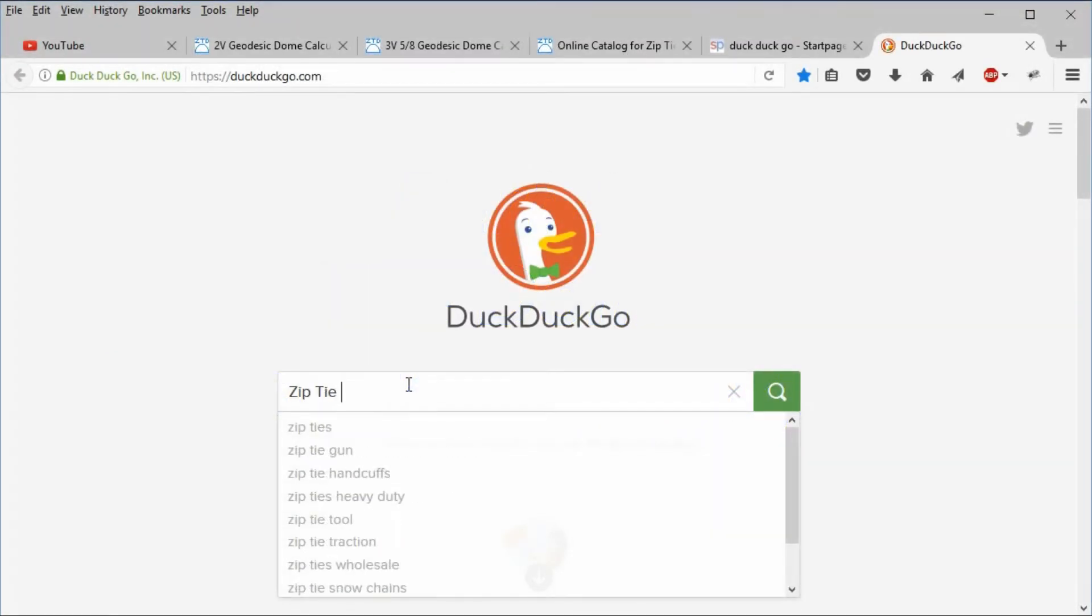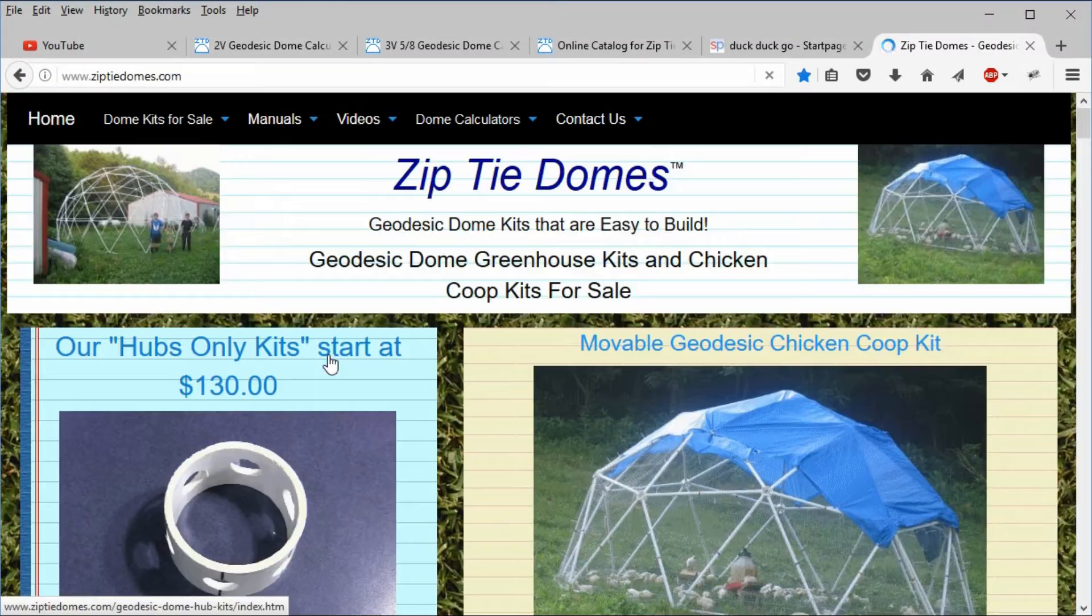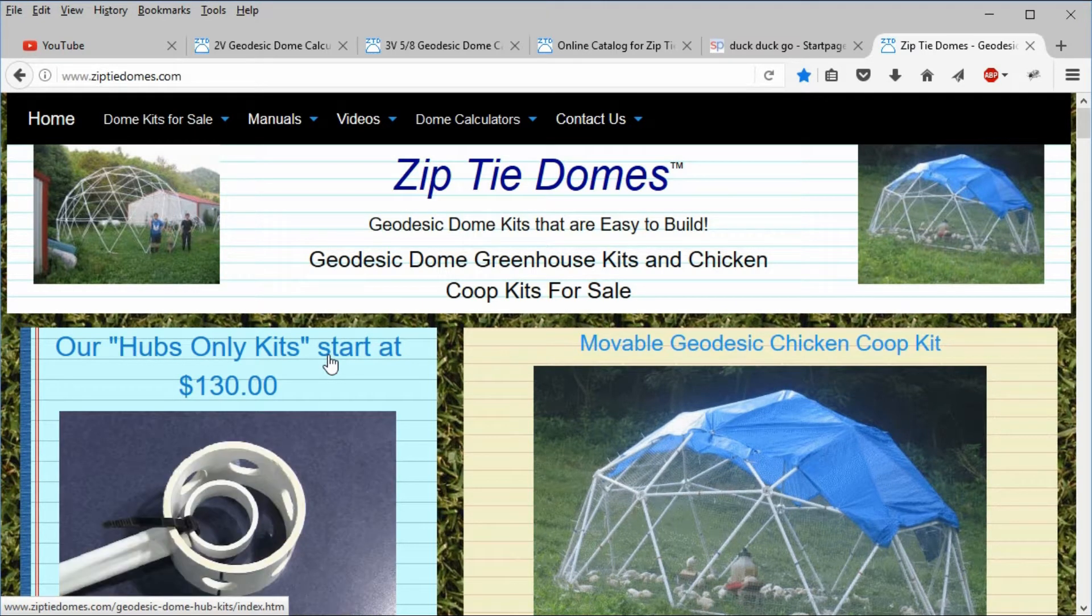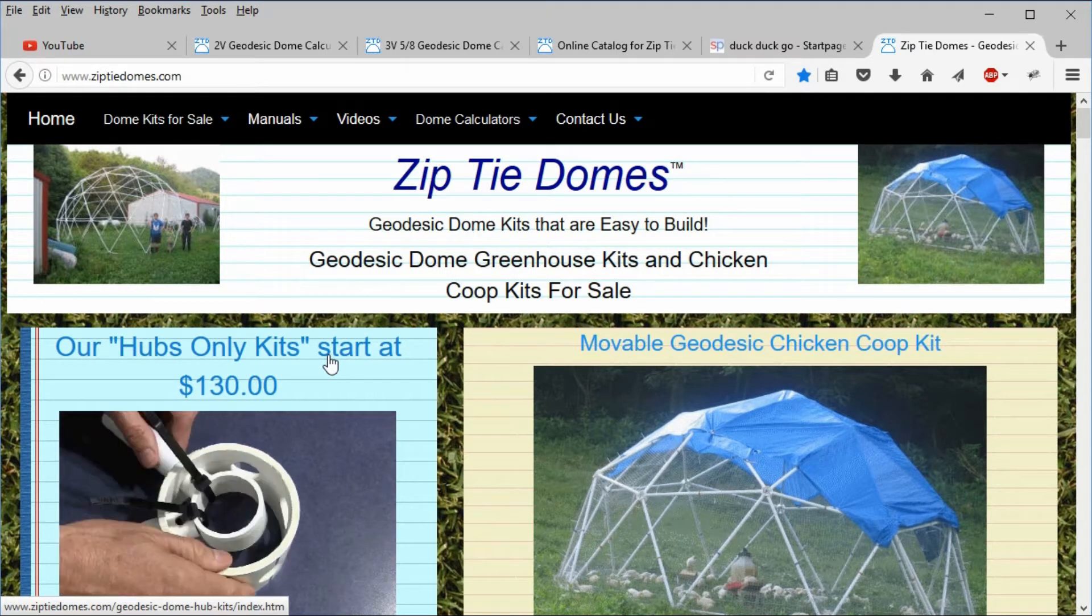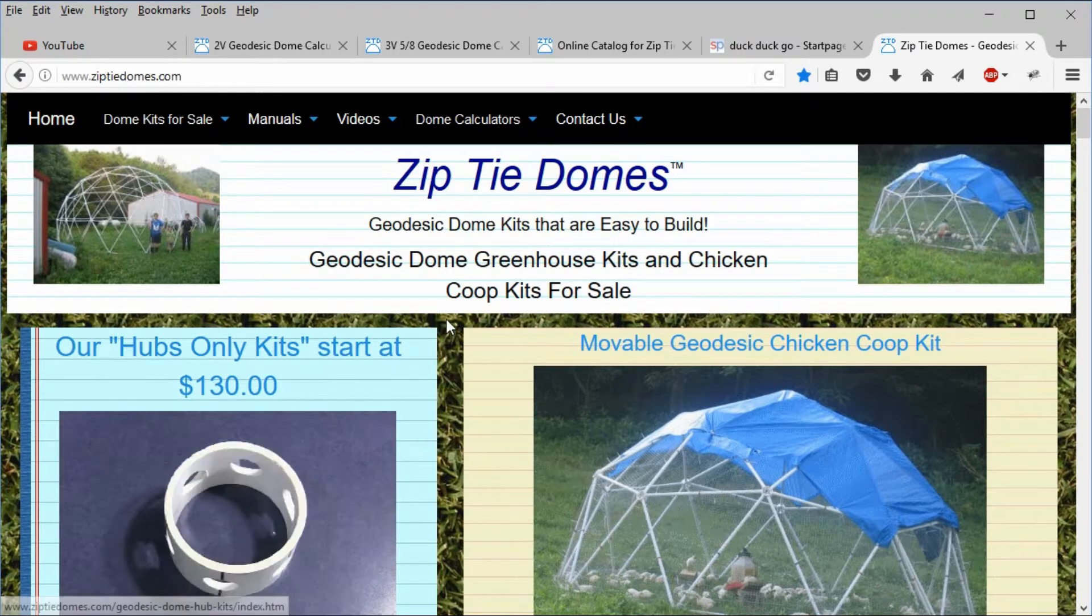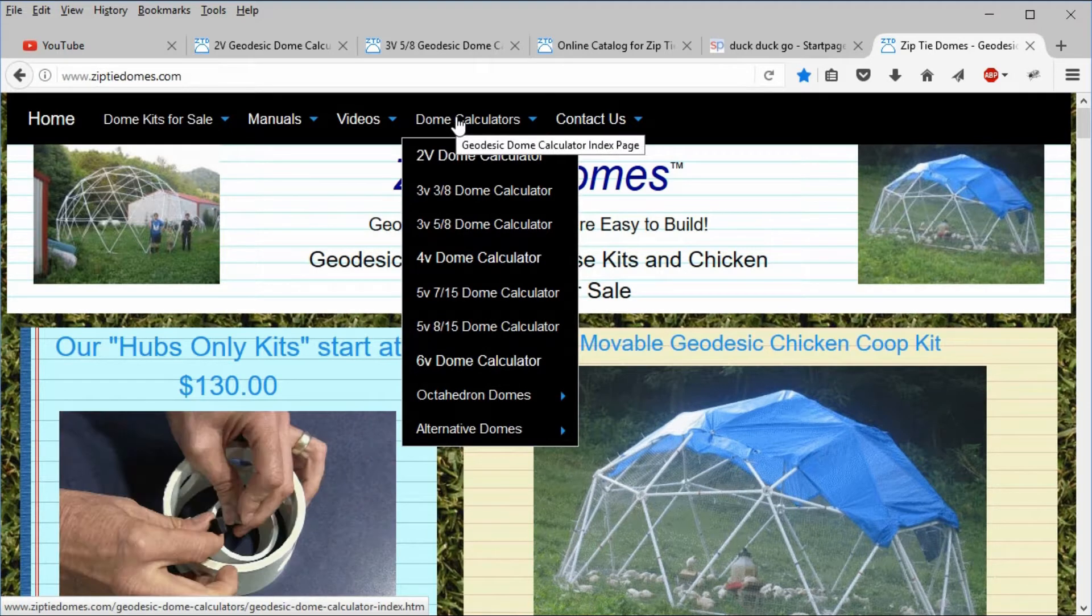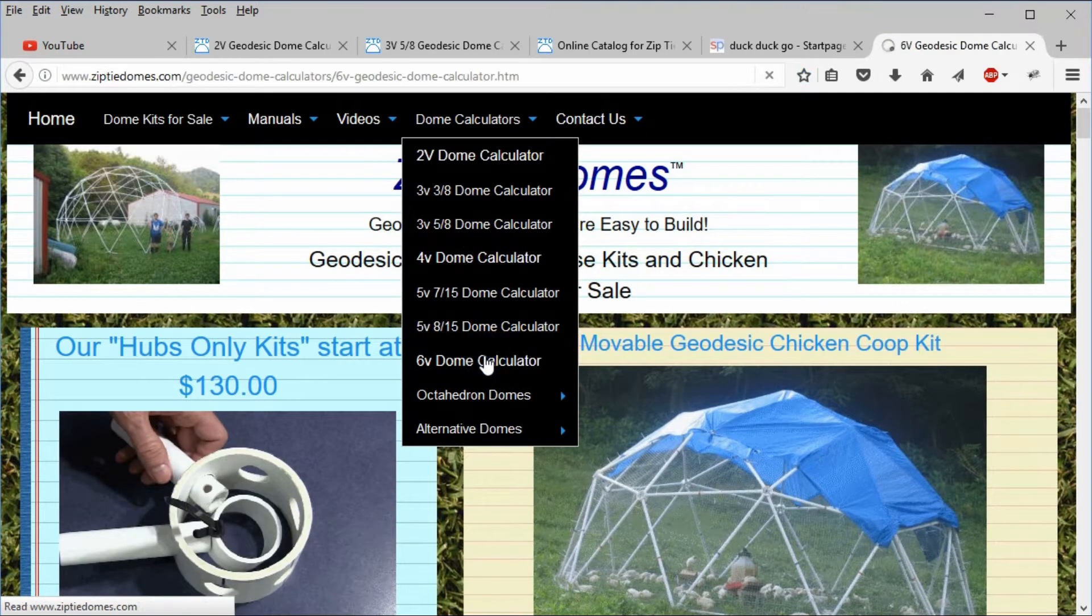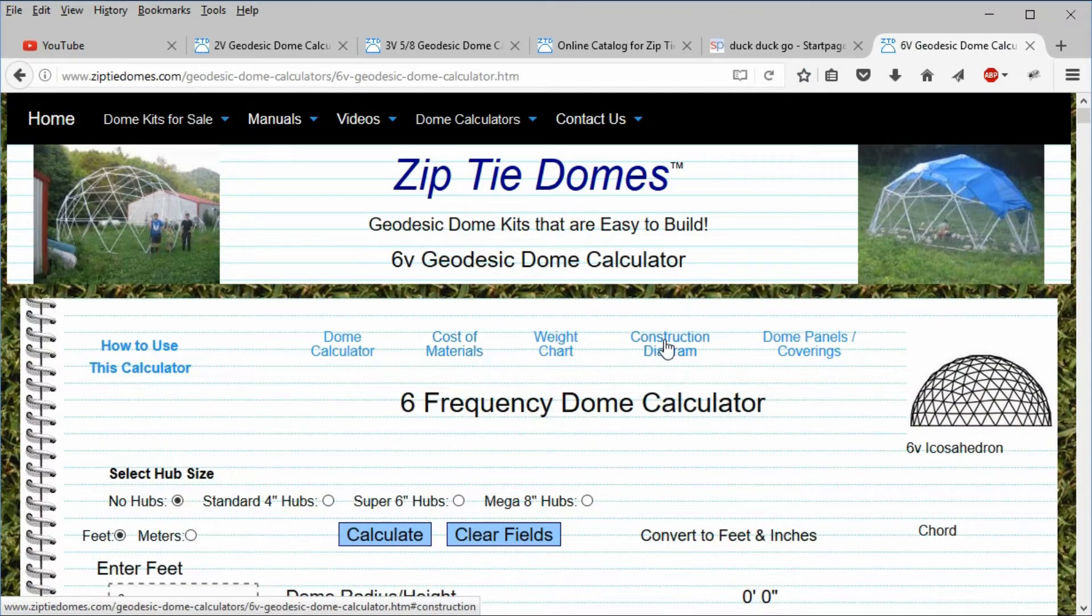Go to our website at www.ziptiedomes.com. Each dome calculator has a dome construction diagram. To see this diagram, select the 6 frequency dome calculator from the drop-down list on the navigation bar and click the construction diagram link.